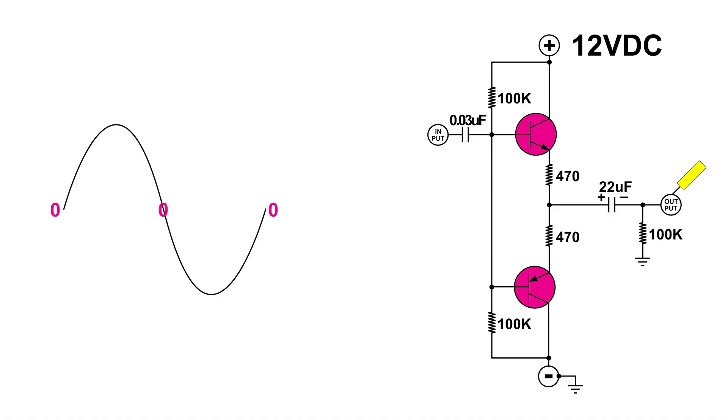Let's continue on in the negative direction. And as it becomes more negative, now the PNP transistor at the bottom is going to start conducting more. And the NPN transistor at the top will be conducting less. And when we have the most negative point of this signal...